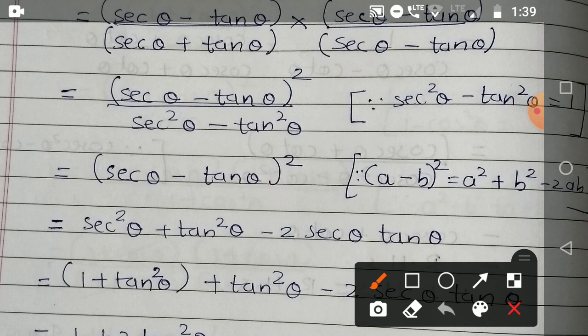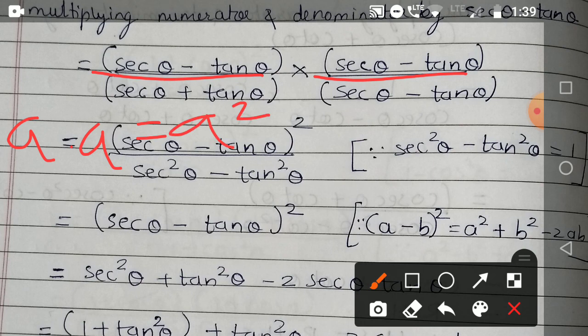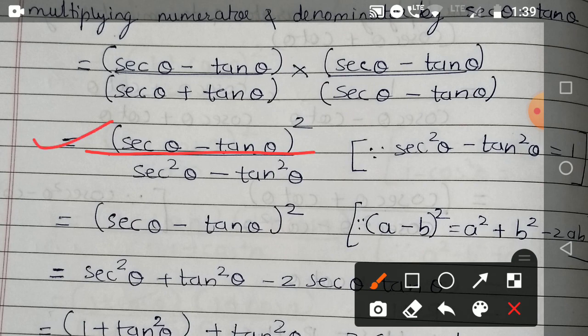Two times here it is sec θ - tan θ. So it is a into a, which is equal to a². So the numerator term becomes (sec θ - tan θ)².